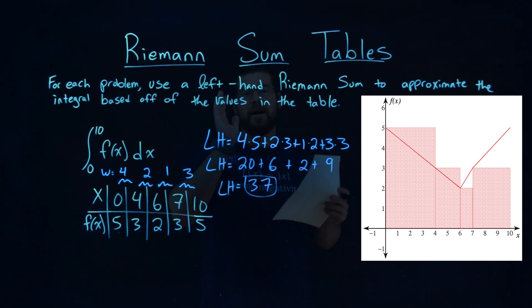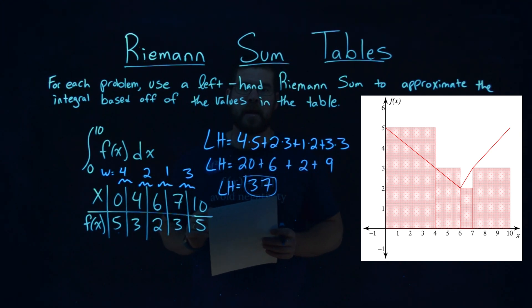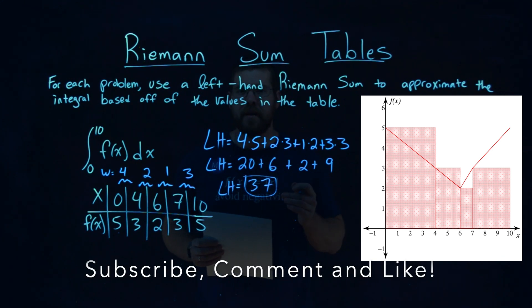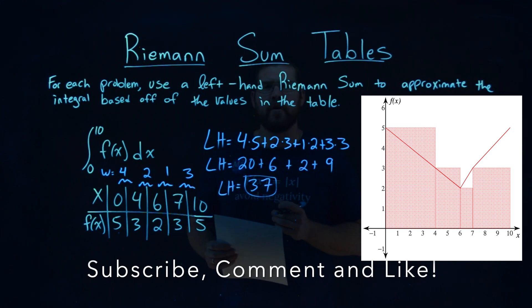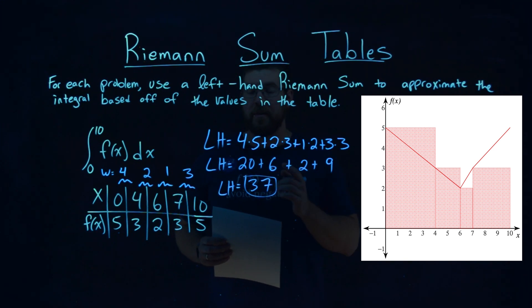And so 37 is the final answer using the left-hand Riemann Sum, the approximation of our integral based on the tables below. I hope this video is helpful for you. And if it was, please subscribe to this YouTube channel and like this video. This helps us make more free math lessons for you and for everyone else. So as always, thanks for watching.